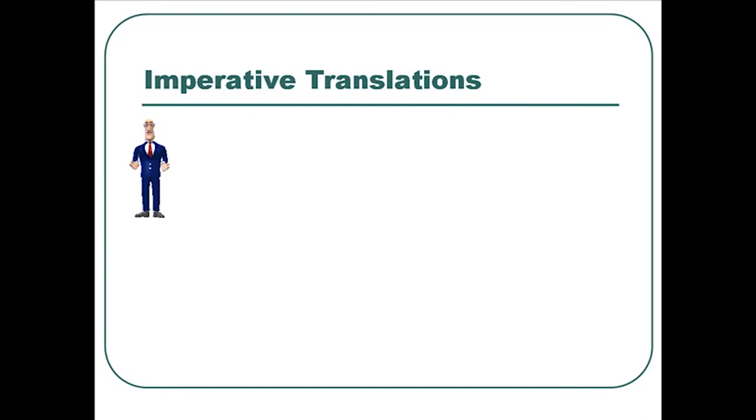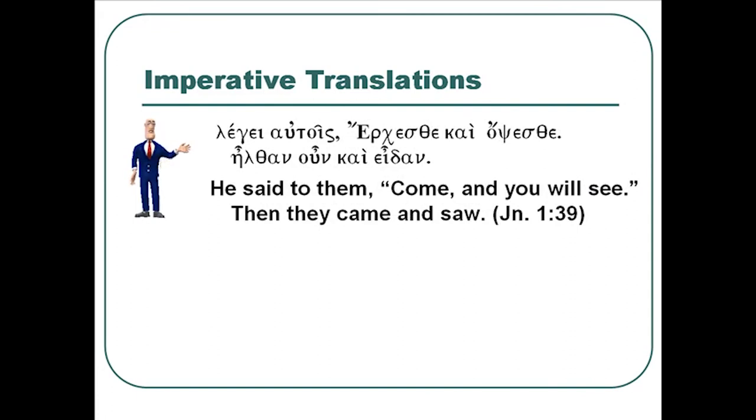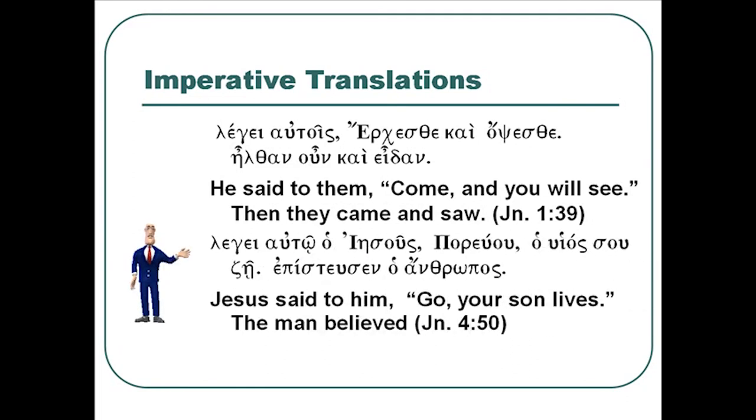Here are a couple imperative translations just to get us started. legei autois, he said to them, taking this historical present, ercesthe kai opsesthe. That's the future of horaō, you will see, come and you will see. ēlthon, un, is then they came, kai eidon, and they saw.